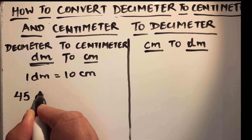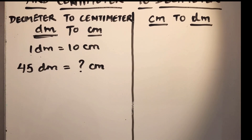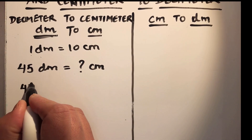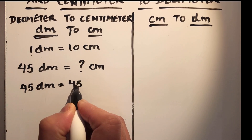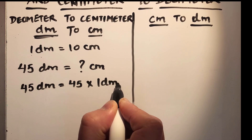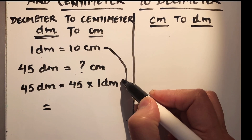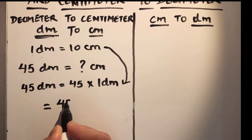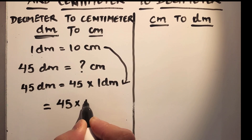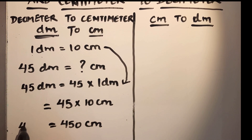Suppose we need to convert 45 decimeters to how many centimeters. We can write 45 decimeters as 45 times 1 decimeter. Now in place of 1 decimeter we are going to write 10 centimeters. So 45 times 10 centimeters, which is equal to 450 centimeters. So 45 decimeters is equal to 450 centimeters.